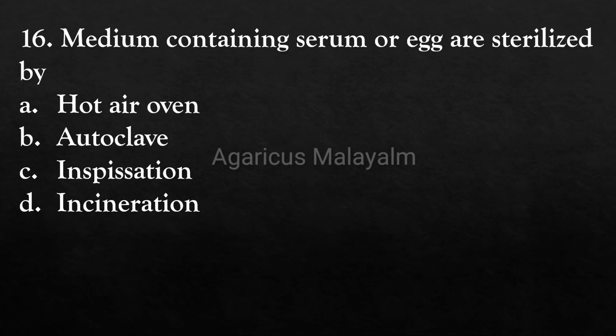Sixteenth question (previous year question): A culture medium containing serum or egg is sterilized by which method? Answer options: Option A - hot air oven, Option B - autoclave, Option C - inspissation, Option D - incineration. Correct answer: Option C - inspissation.